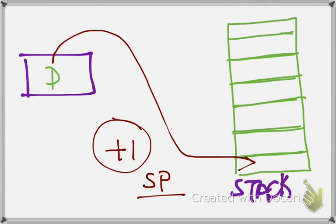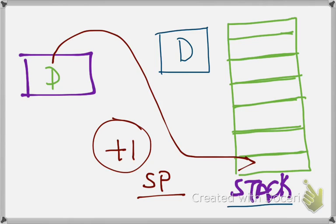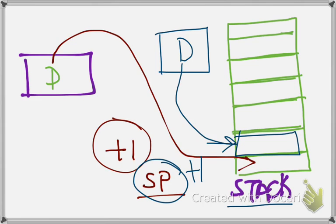So the next time when I want to store another piece of data, I push it, and before storing the data in the stack, the stack pointer is incremented by 1. The stack pointer then points to the new address, and my data is stored there. When I want to store new data, I push it, the stack pointer moves up and stores the data there.